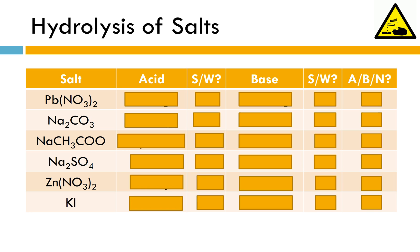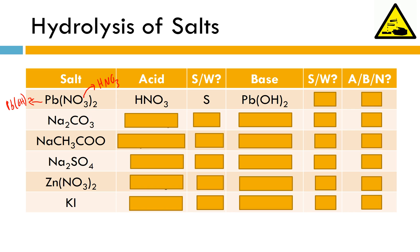We have Pb(NO₃)₂, lead(II) nitrate. The cation comes from the base, so that must have been Pb(OH)₂. The anion comes from the acid, so this came from HNO₃. Nitric acid — is it strong or weak? This is a strong acid; there's no way to tell just by looking at it, you have to memorize your seven strong acids and bases. Lead(II) hydroxide is our base — it's not on our list of seven strong bases, so this is a weak base. So with a strong acid plus a weak base, we will see an acidic endpoint. Go ahead, pause the video and try out the remaining five questions.